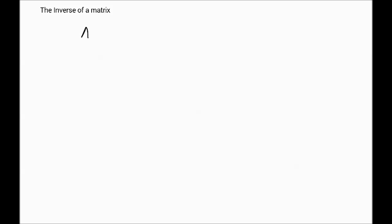In this video we're going to look at the inverse of a matrix. The inverse of a matrix A is some matrix B such that the product AB equals BA, and that product is actually the identity matrix of appropriate size. This magic matrix B is referred to as the inverse of the matrix A.